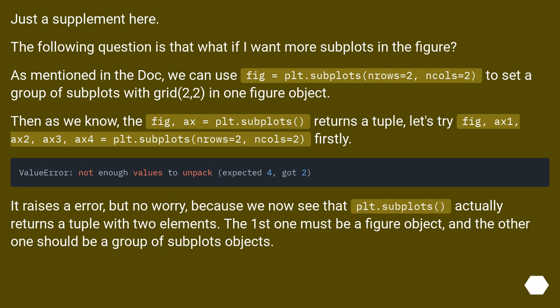Then as we know, fig, ax = plt.subplots returns a tuple. Let's try fig, ax1, ax2, ax3, ax4 = plt.subplots(nrows=2, ncols=2) firstly.